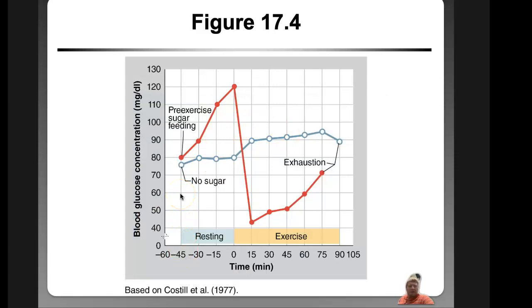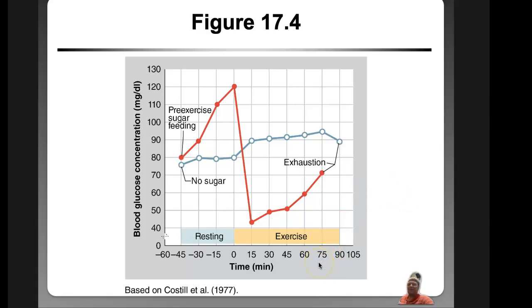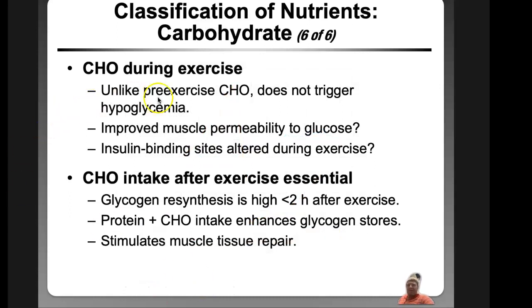Looking at blood glucose during exercise: pre-exercise sugar intake causes a rise then a drop, while no sugar in comparison shows different dynamics. Blood samples were taken throughout exercise, completed at a full 90 minutes at 70% of VO2 max. The sugar feeding trial only made it to 75 minutes — they couldn't even finish the test. Unlike pre-exercise carbohydrates, carbs during exercise don't trigger hypoglycemia, possibly by improving muscle permeability to glucose and altering insulin binding sites. Carbohydrate re-synthesis is really high for the first two hours after exercise.